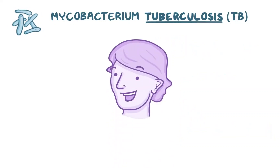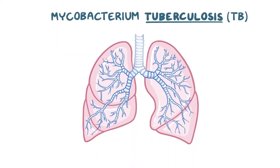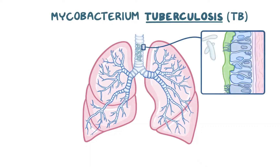Mycobacterium tuberculosis is usually transmitted via inhalation, which is how they gain entry into the lungs. We breathe in all sorts of viruses and bacteria all the time, but we've got defenses that take care of most of them. For one, air that we breathe in is turbulent in the upper airways, and drives most bacteria against mucus which is then cleared pretty quickly.